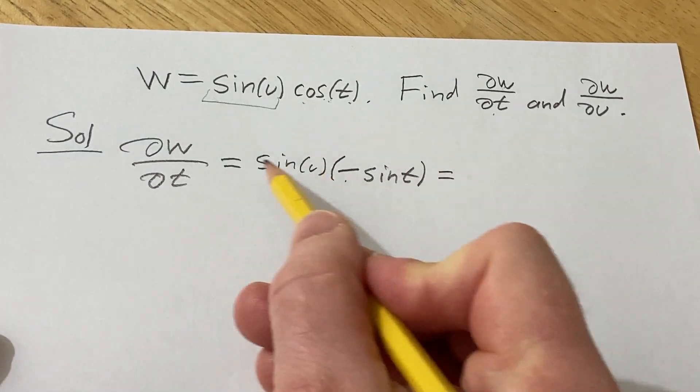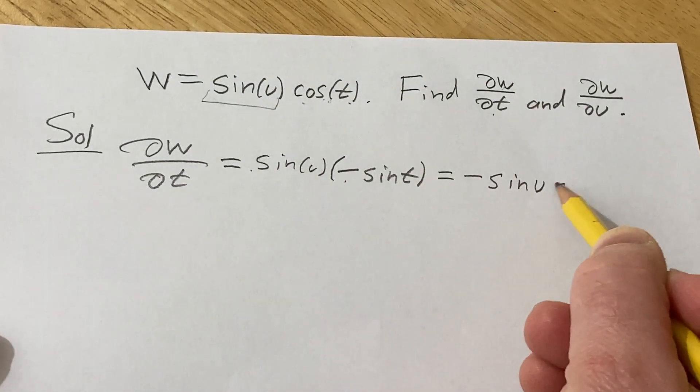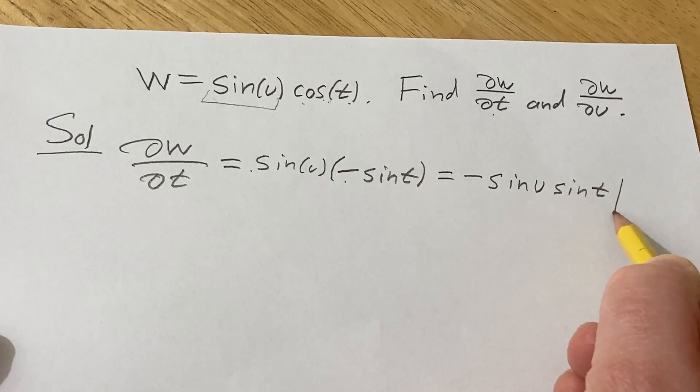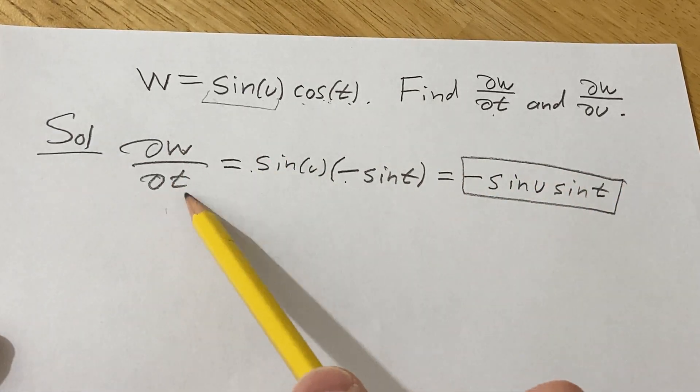Then what you can do is you just put the negative one in the front, so this is negative sine u, sine t. And that would be the partial derivative of w with respect to t.